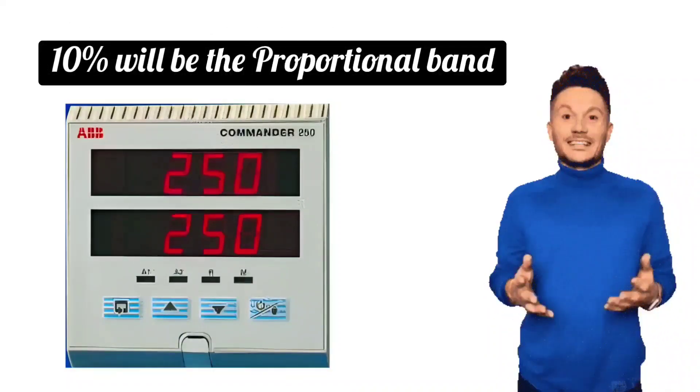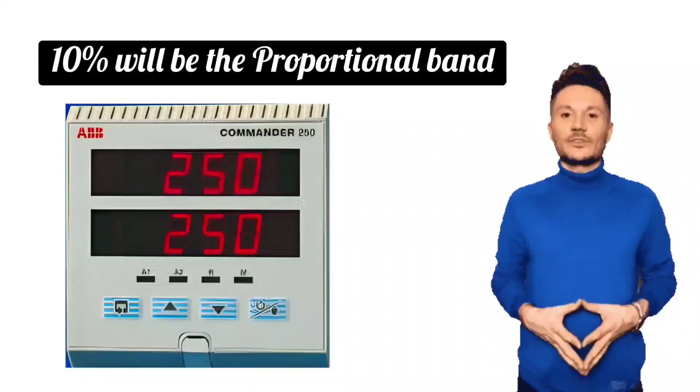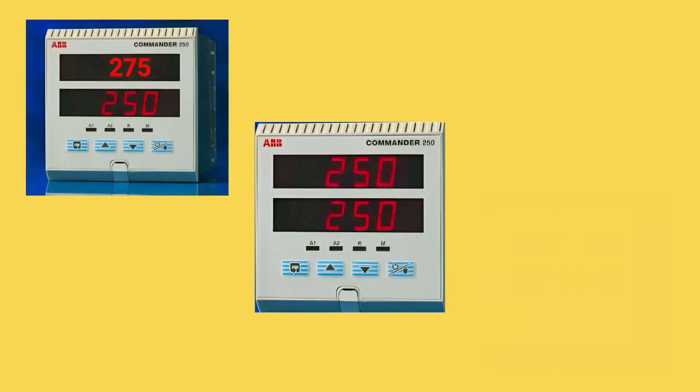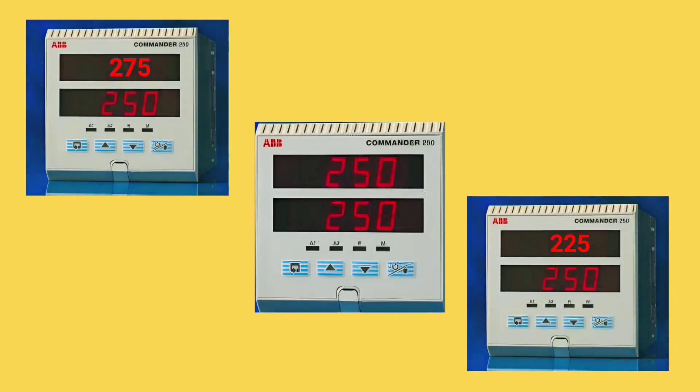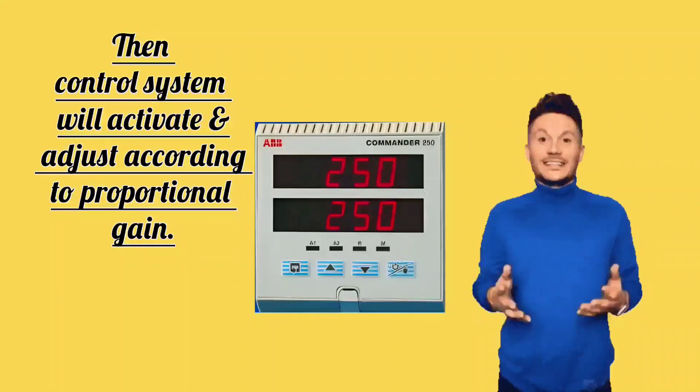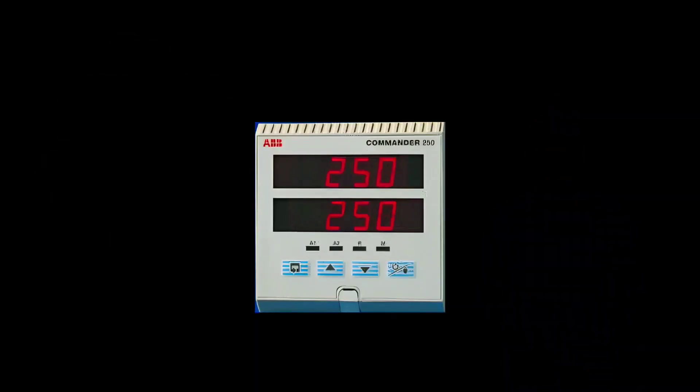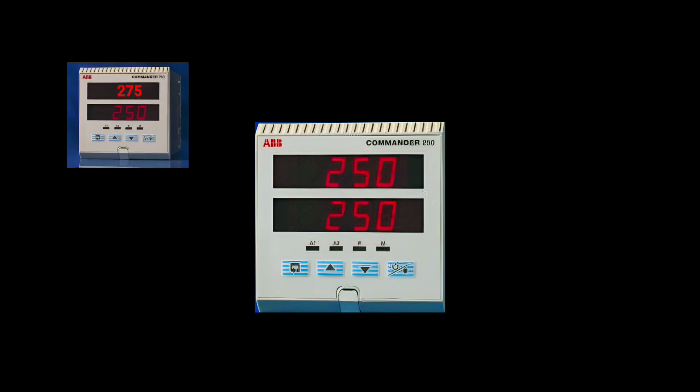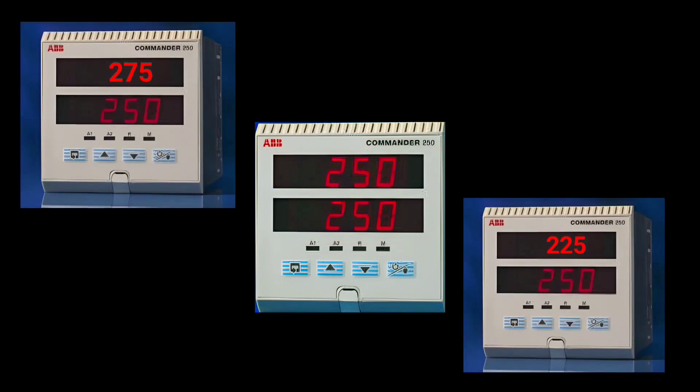This means that when the temperature reaches 10% above or below the actual set point, then control system will activate and adjust according to the proportional gain. Meaning, it will maintain the process variable between 10% up and down of the set point.